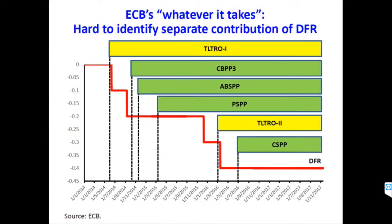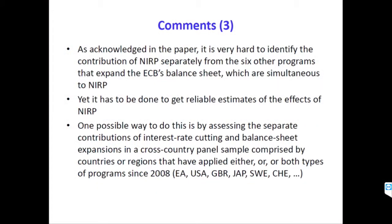My third comment: as acknowledged in the paper, it is very hard to identify the contribution of NIRP separately from the six other programs that expanded the ECB's balance sheet simultaneously. NIRP started around June 2014 in two steps, then reached minus 0.2%, and then two more steps around mid-2016 — but it's very hard to distinguish this from the other six programs. It's therefore difficult to get reliable estimates of the effects of NIRP, particularly on bank lending volumes and deposits.